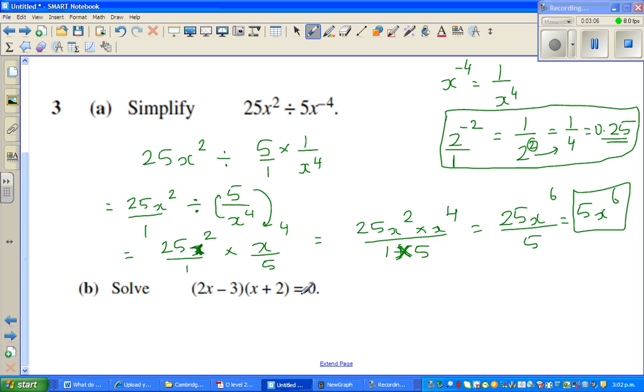Next question. Solve this: (2x - 3)(x + 2) = 0. So this is a quadratic equation. I'm going to expand this. Now this is based on a very simple fact. Say if a times b is equal to 0, when can two numbers, the product of two numbers be 0?